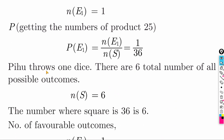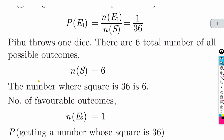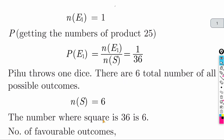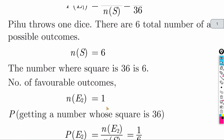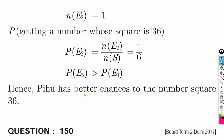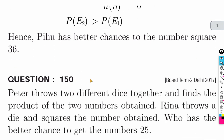Pihu throws one die and records the square of the number. There are 6 total possible outcomes. The number whose square is 36 is 6. So the favorable outcome is 1. Pihu's probability is 1 by 6. Comparing 1/36 and 1/6, Pihu has the better chance.